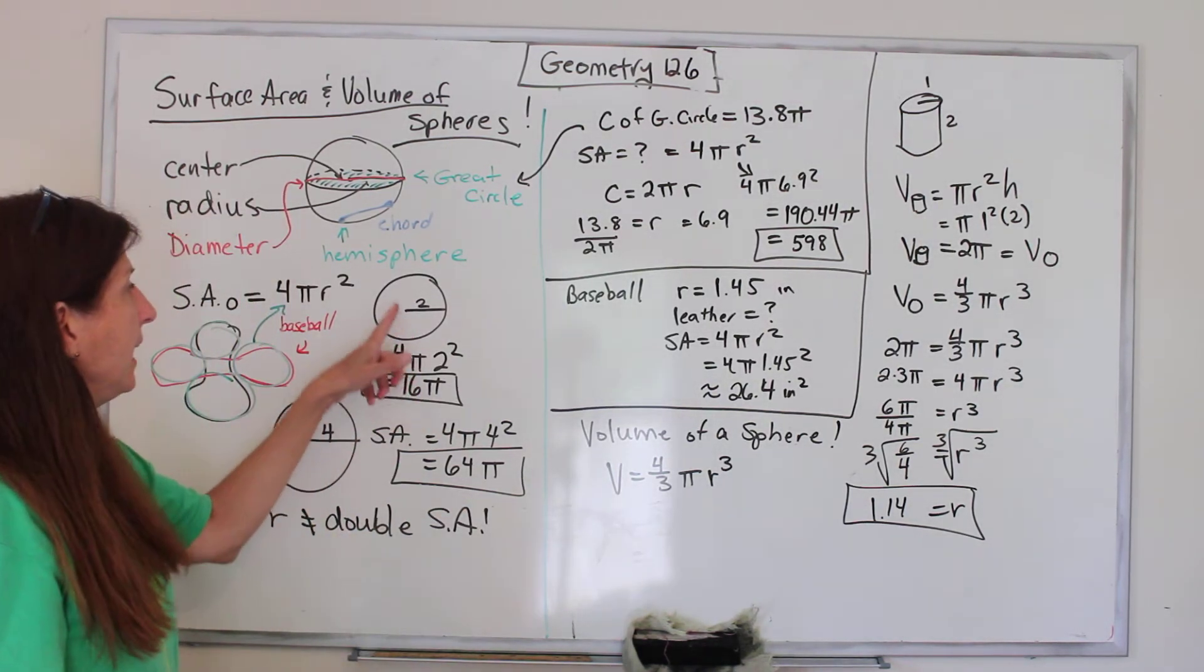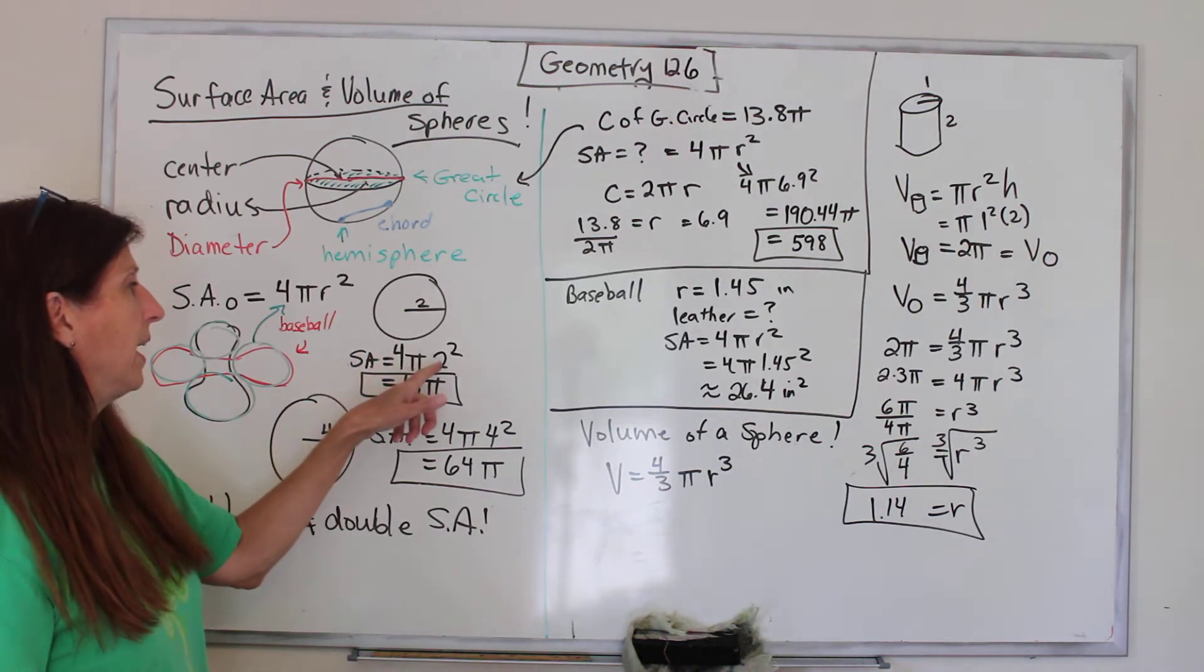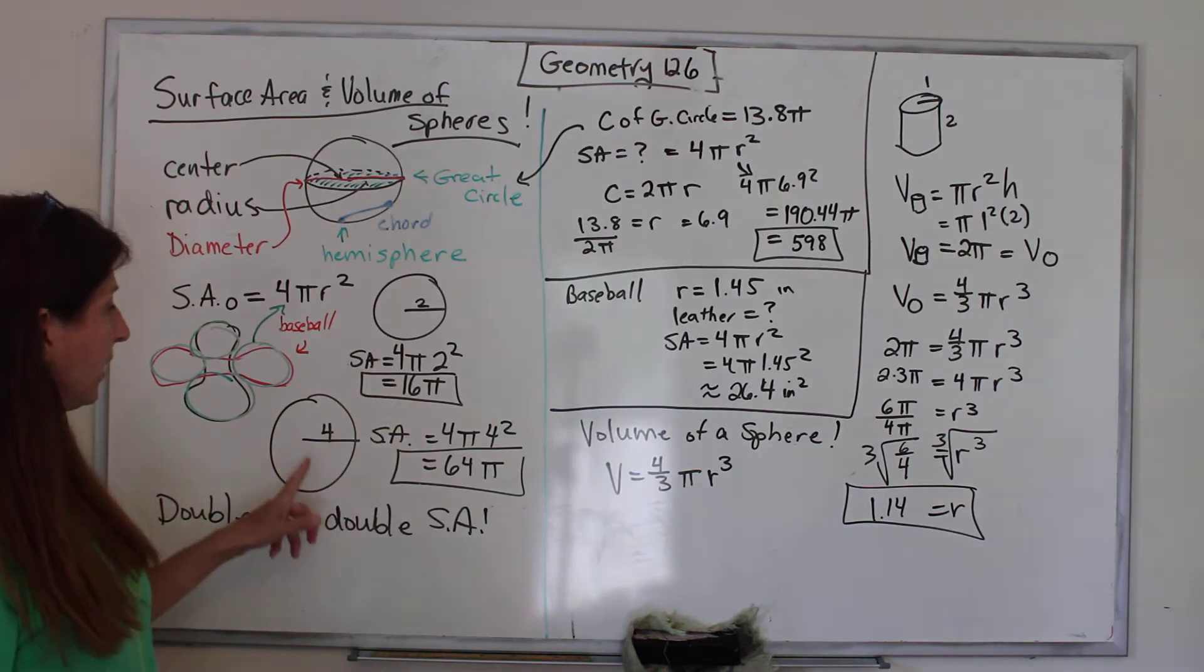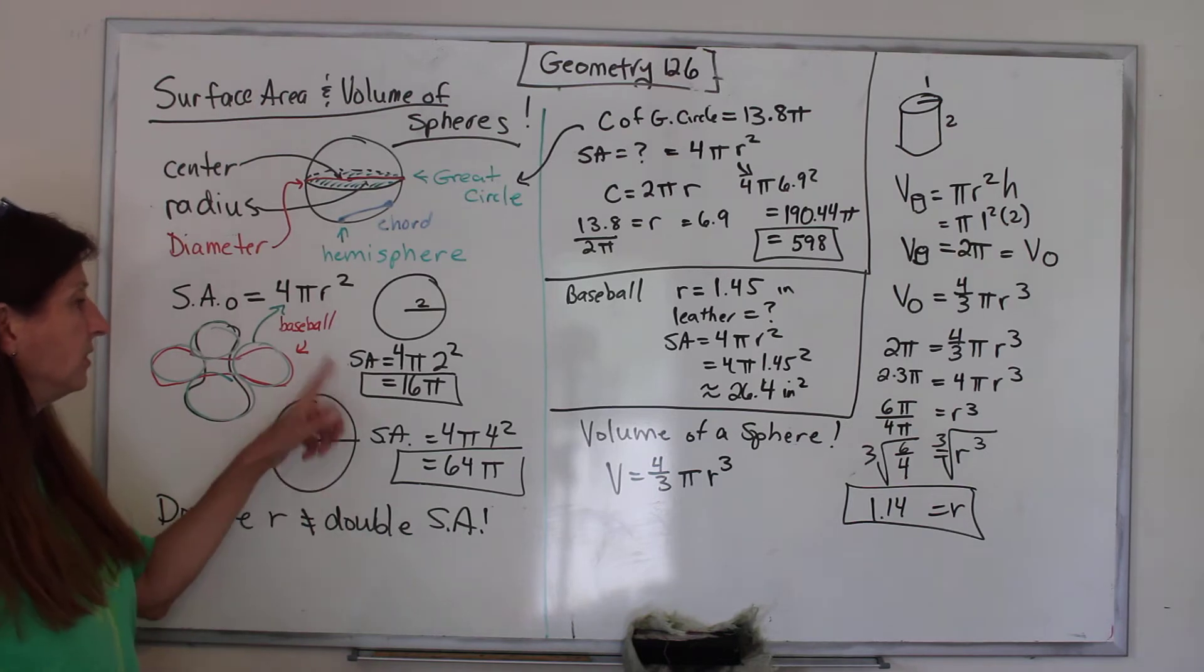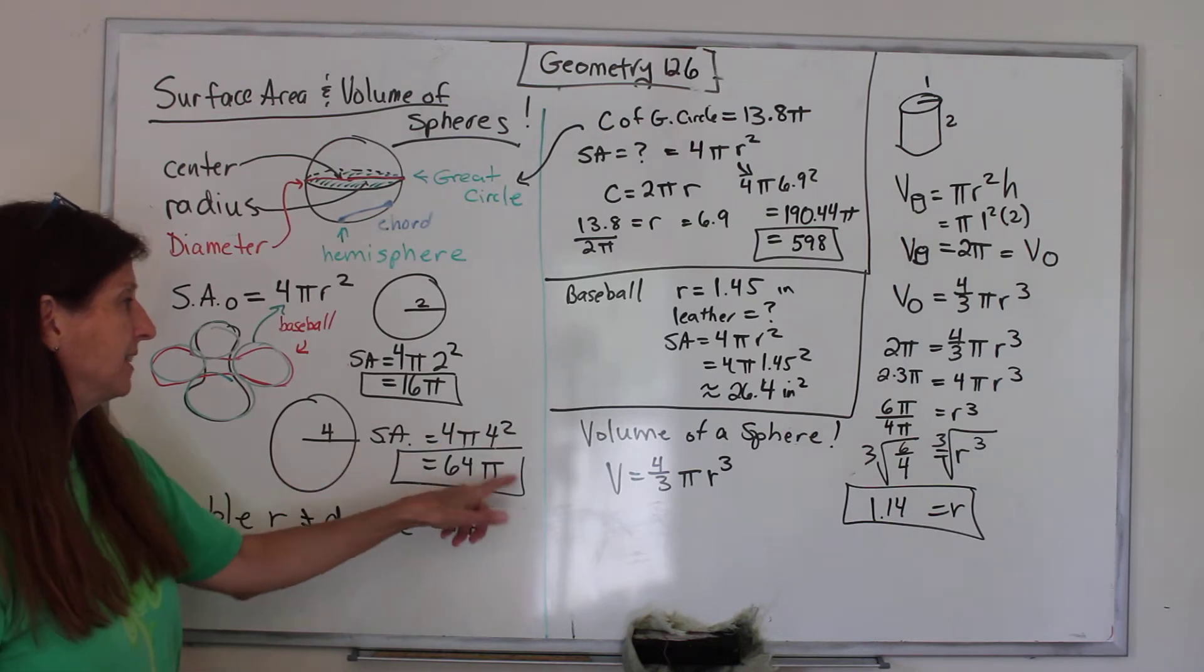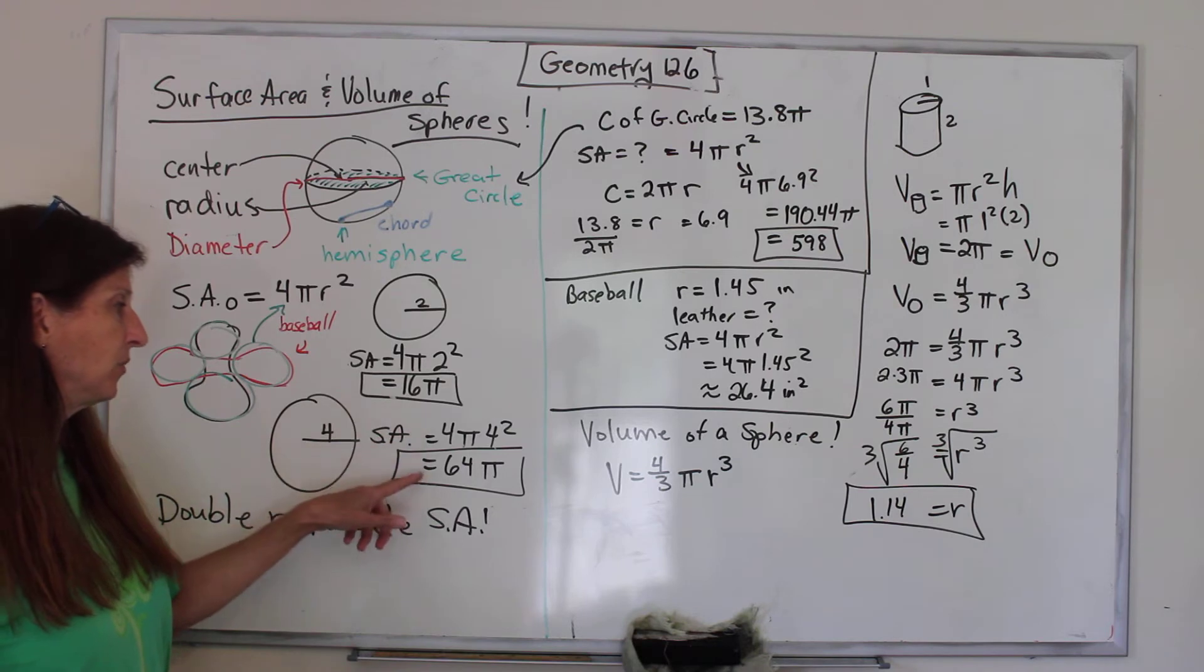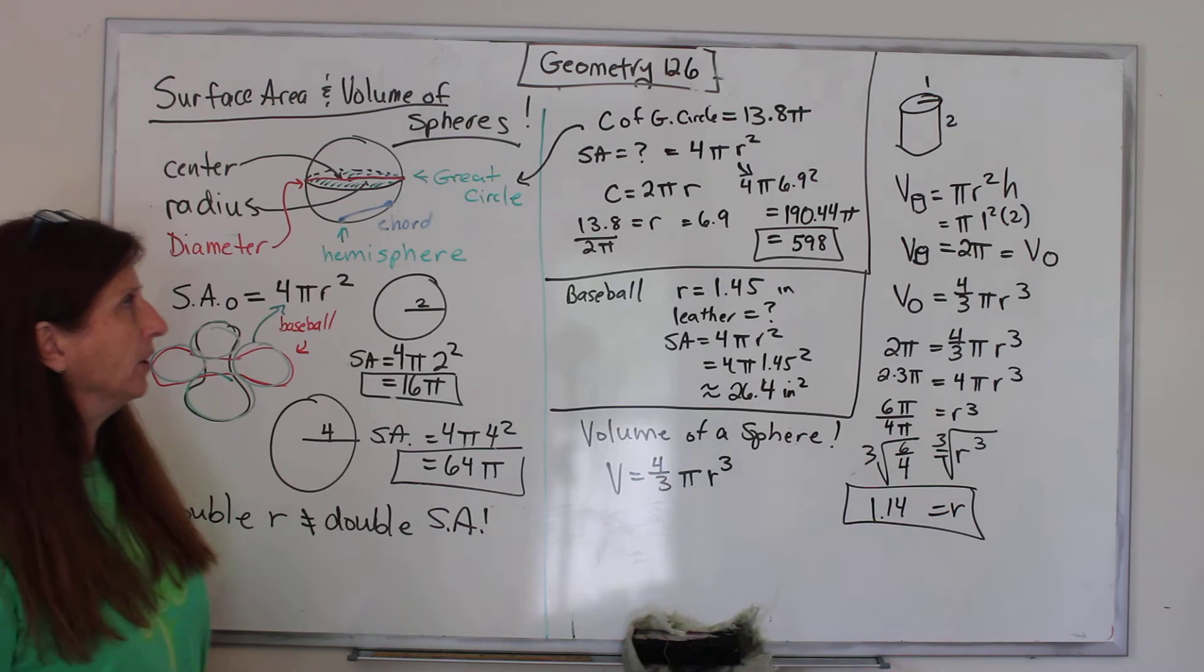Let's do one. Here is a sphere with a radius of 2, so the surface area is 4πr², which equals 16π. But what if we have another sphere with a radius of 4? Will doubling the radius double the surface area? Let's see, 4π(4²) is 64π. That's a whole lot more than double. So doubling the radius does not double the surface area.